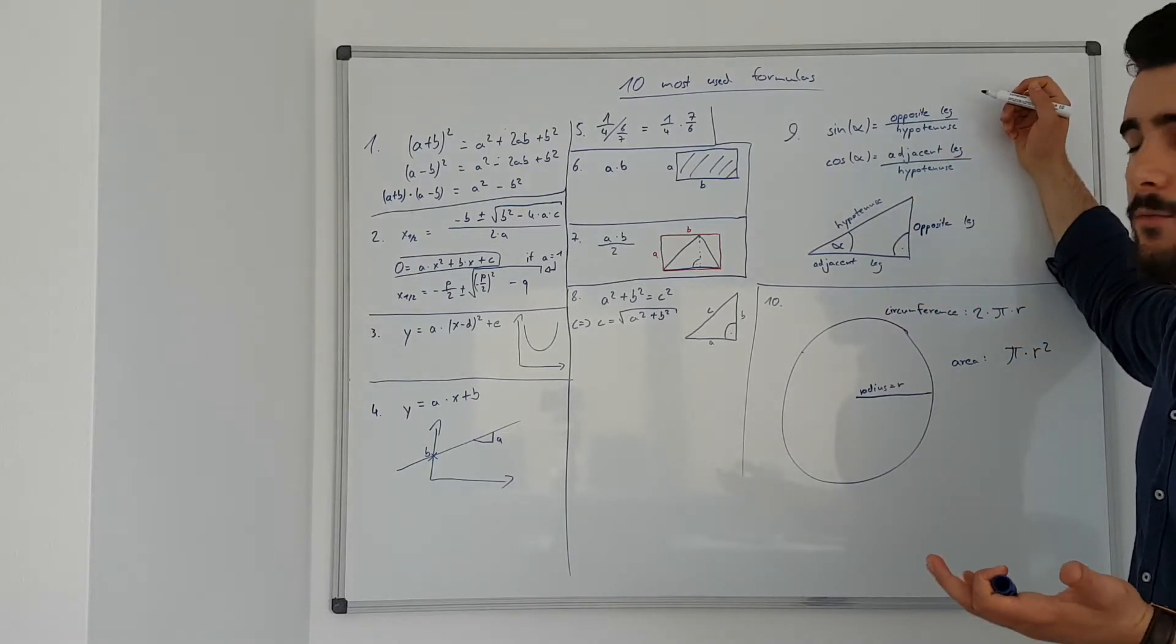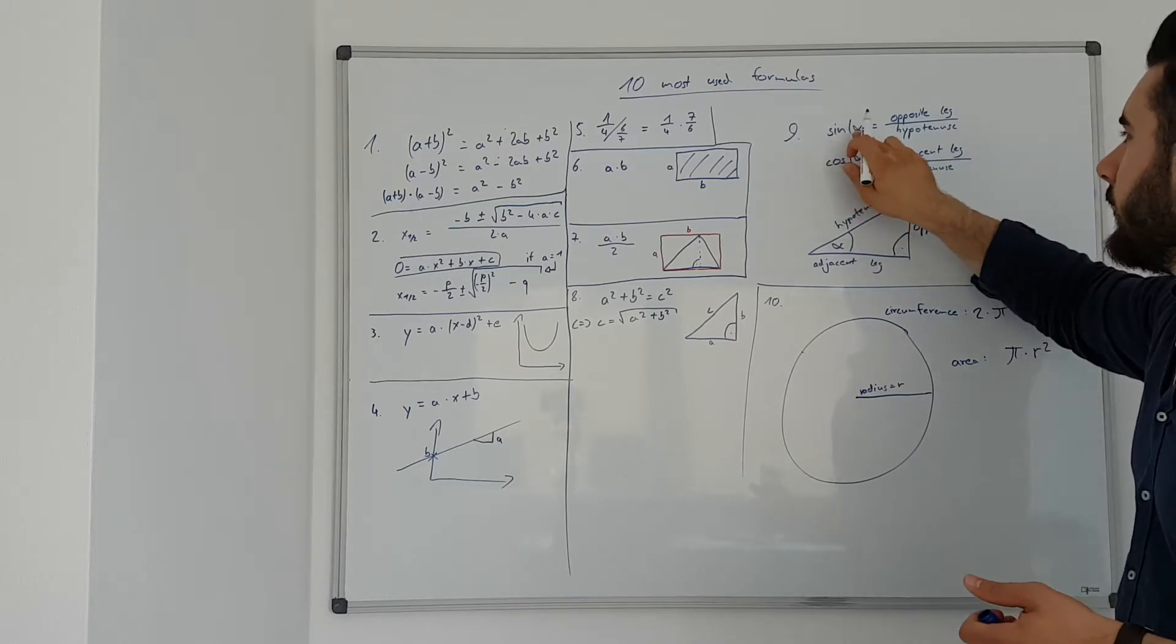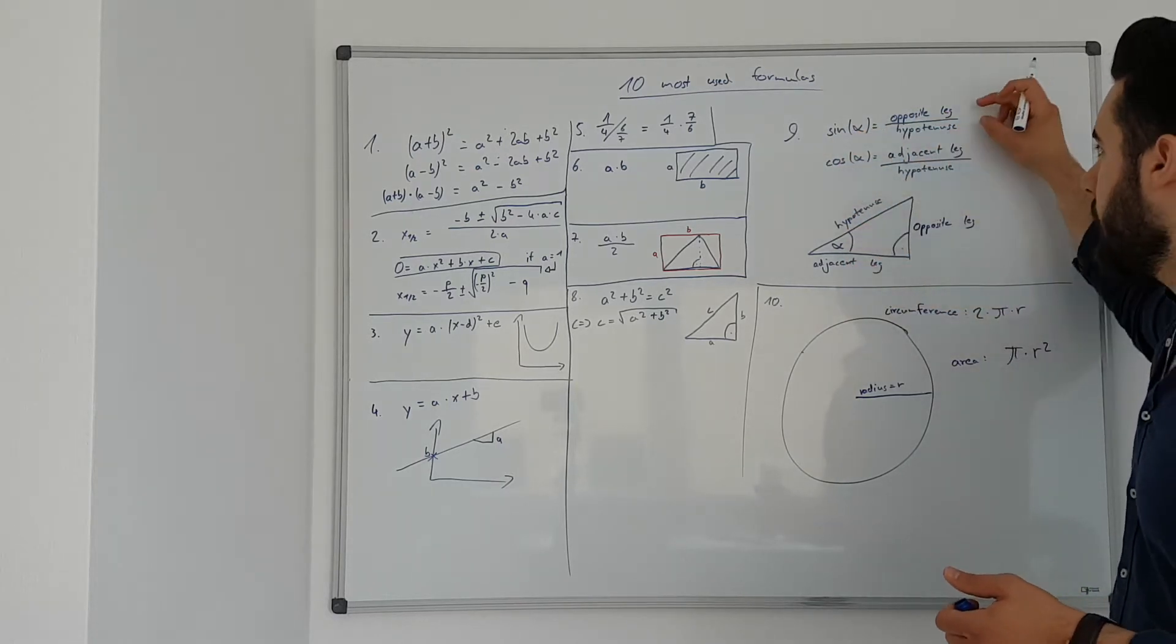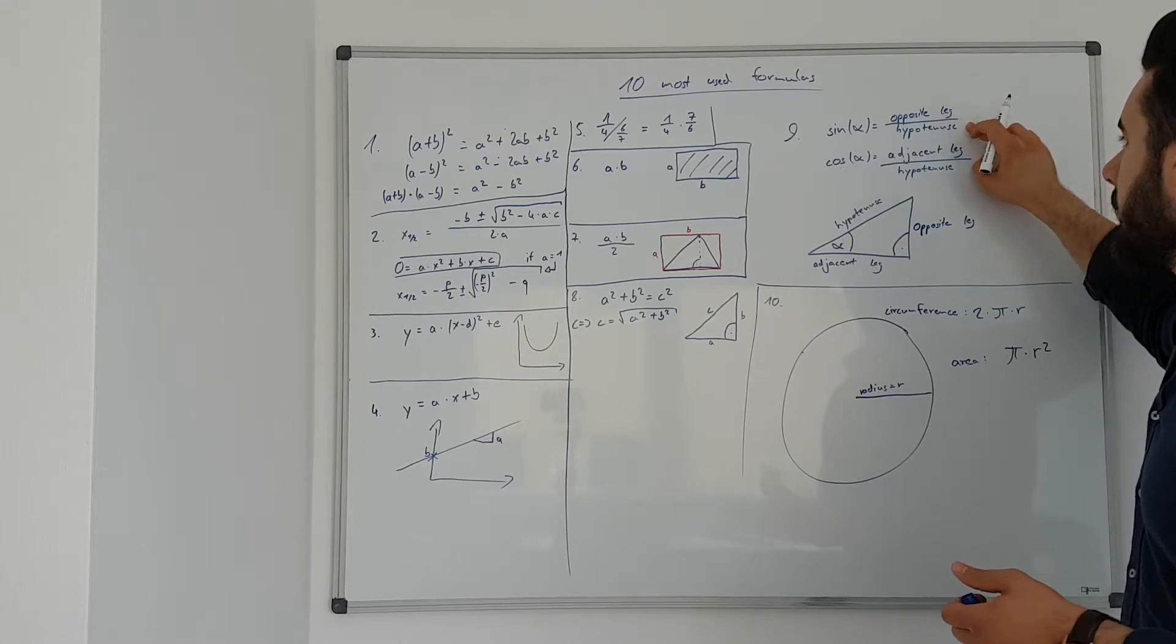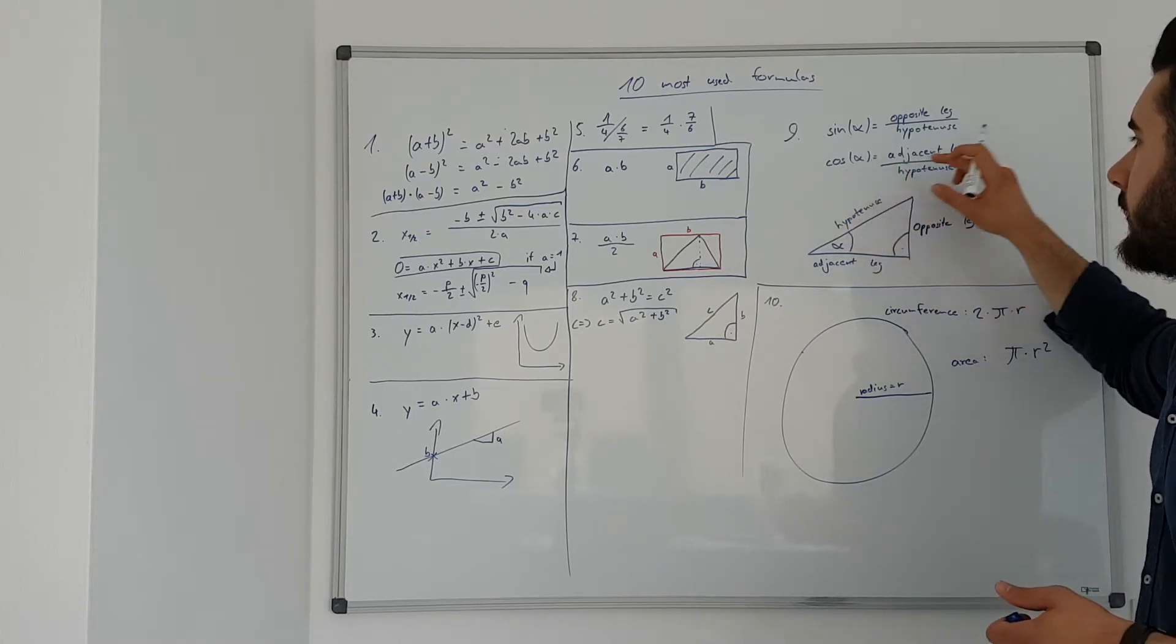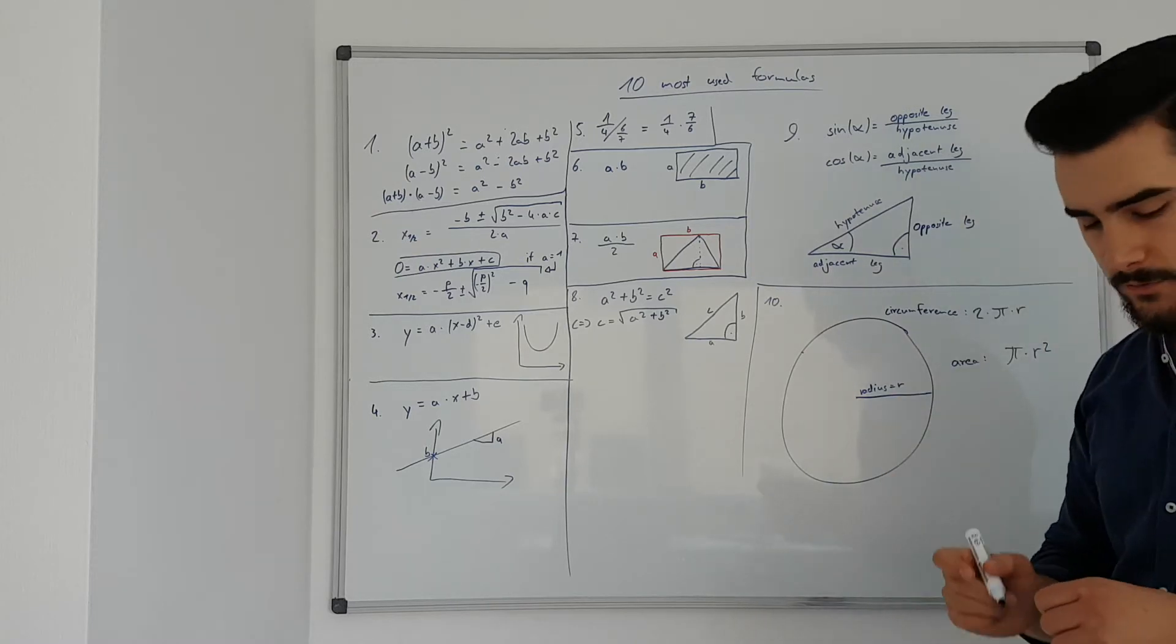So if you want to find out the numbers, for example, you use sinus to calculate this angle here. So opposite leg divided by hypotenuse, and cosine for the adjacent leg divided by hypotenuse.